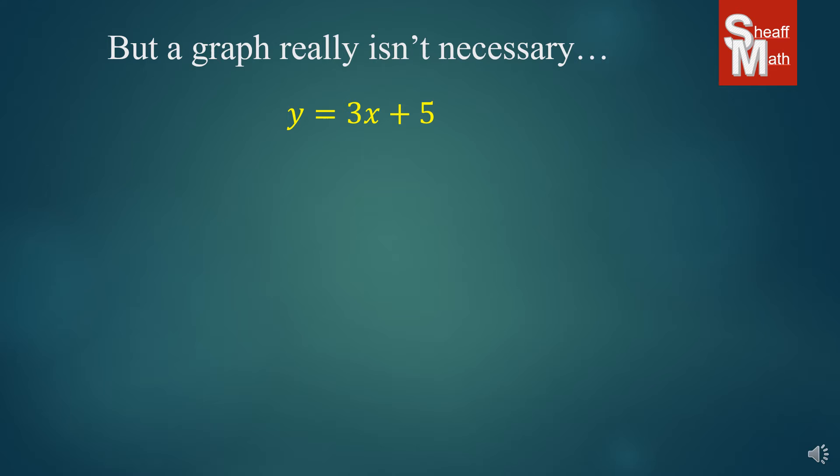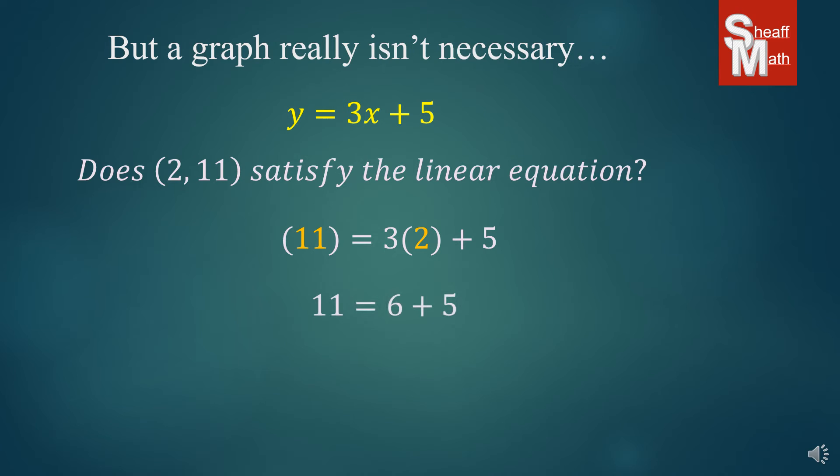So here's another example. y equals 3x plus 5. And the question is, does (2, 11) satisfy the linear equation? So what we're going to do is 2 is the x, and 11 is the y. We're going to put 2 in for x and 11 in for y, just like this. And we're going to simplify and see if the left side equals the right side. If it works, then it does satisfy the linear equation. So 3 times 2 is 6, and 6 plus 5 is definitely 11. Therefore, the answer is yes. It does satisfy that linear equation. It is one of the points on that line.